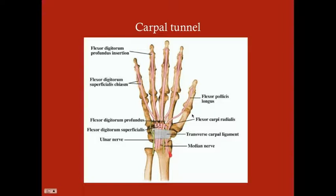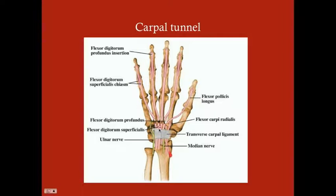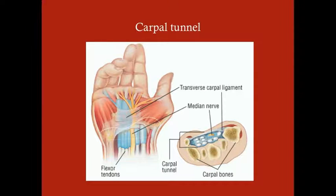What passes through the carpal tunnel: the transverse carpal ligament (flexor retinaculum) forms the roof. Nine flexor tendons pass through — from flexor pollicis longus, flexor digitorum superficialis, and flexor digitorum profundus. Plus the median nerve. Those are the key structures within the carpal tunnel.